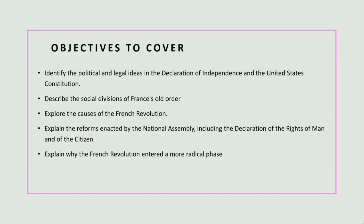As the revolution progressed, it entered a more radical phase. Increasingly radical factions, such as the Jacobins, gained influence. The monarchy was abolished, and King Louis XVI was executed in 1793. A period known as the Reign of Terror followed, marked by mass executions and the suppression of perceived counter-revolutionaries. The revolution entered a more radical phase partly due to external threats — France was at war with multiple European monarchies, and this external pressure further fueled the radicalization of the revolution as leaders sought to consolidate power and defend the republic.